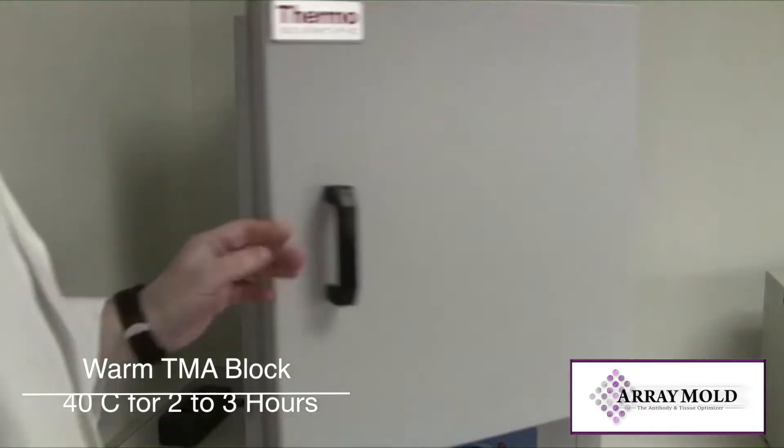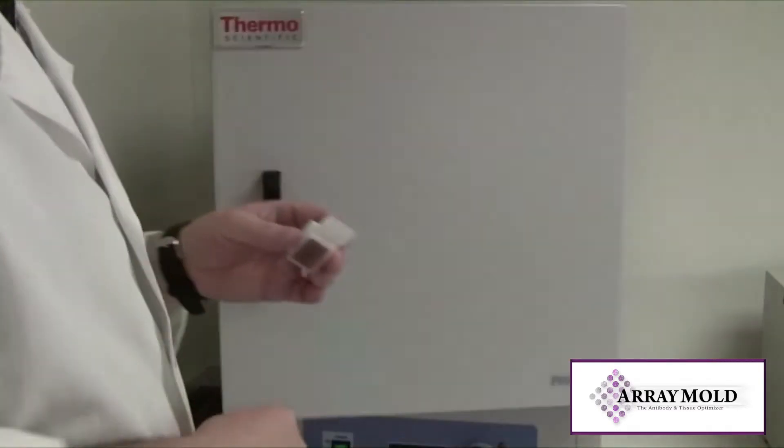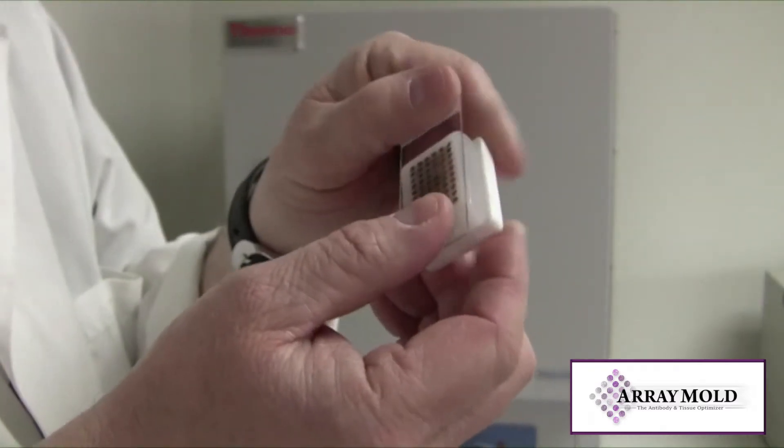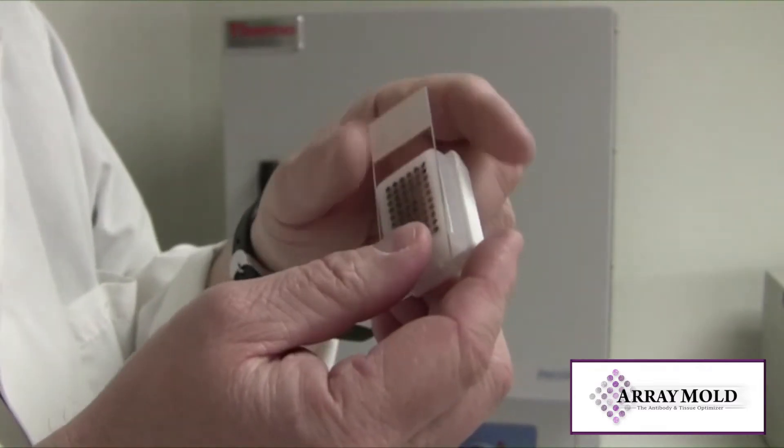Now you'll need to remove the paraffin block and slide from the oven, but don't separate them yet. You will need to heat up another slide around 70 to 80 degrees Celsius by itself. I'll explain why in a moment.